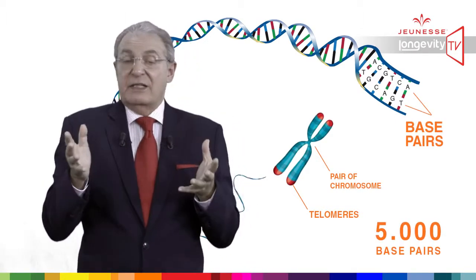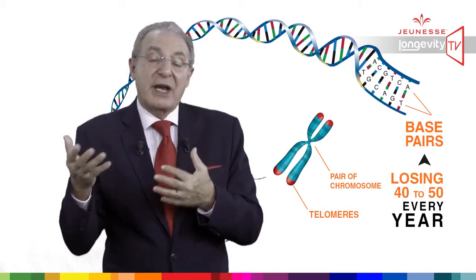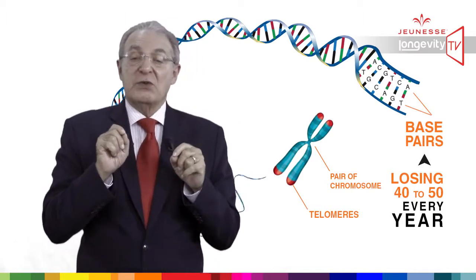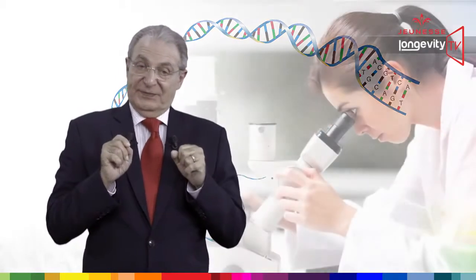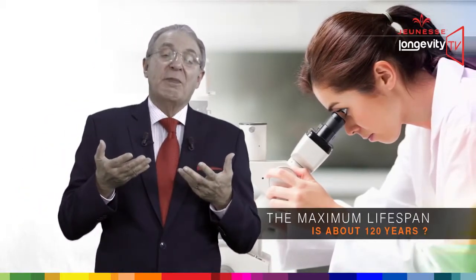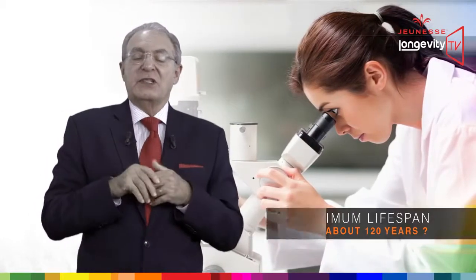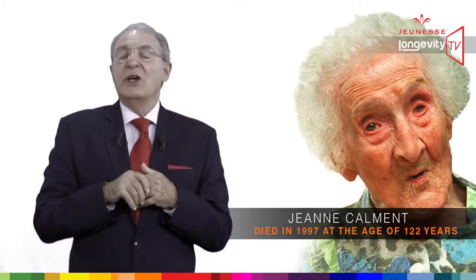In a sense, we start to die the minute we are conceived. When telomeres are reduced to 5,000 base pairs, our cells become senescent and die. We are losing approximately 40 to 50 base pairs every year, so theoretically it should take 120 years to get all our telomeres reaching that 5,000 base pair limit. This is why some scientists believe the maximum lifespan is about 120 years. The world record of longevity still belongs to Jeanne Calment, a French lady who died in 1997 at the age of 122 years — what a coincidence.